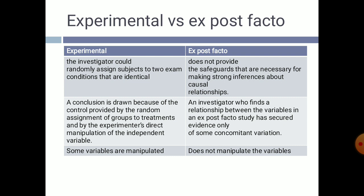Now let's look at the differences between experimental research and ex post facto. In experimental research, the investigator can randomly assign subjects to two identical conditions. In ex post facto, it does not provide the safeguards necessary for making strong inferences about causal relationships. In experimental research, a conclusion is drawn because of the control provided by random assignment of groups, treatments, and the experimenter's direct manipulation of the independent variable.